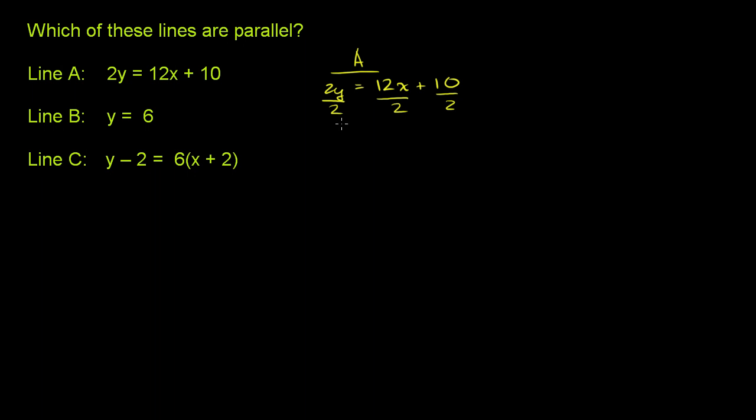Let's divide all the terms by 2. We get y is equal to 6x, 12 divided by 2, 6x plus 5. So our slope in this case, we have it in slope-intercept form, our slope in this case is equal to 6.